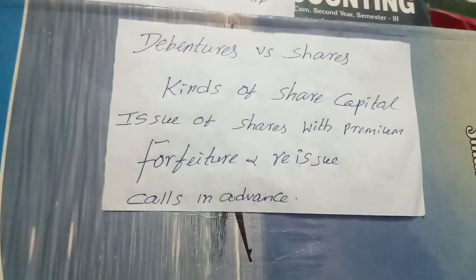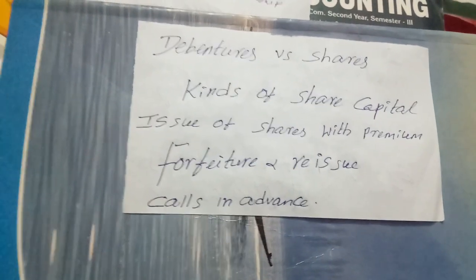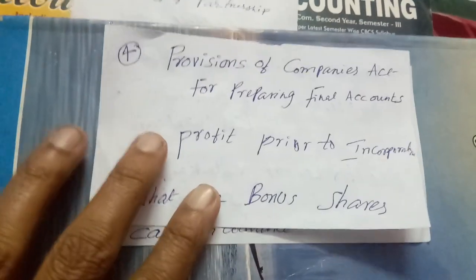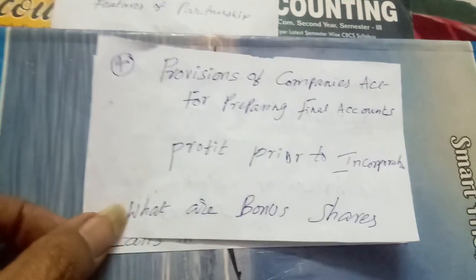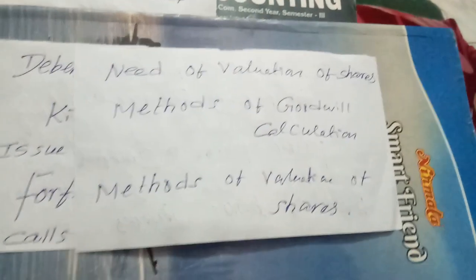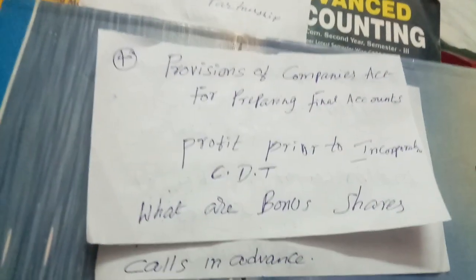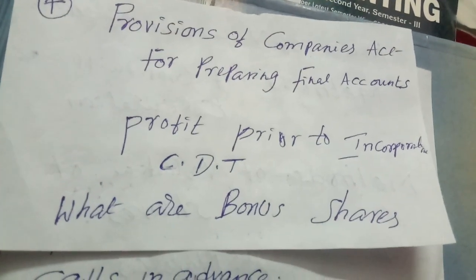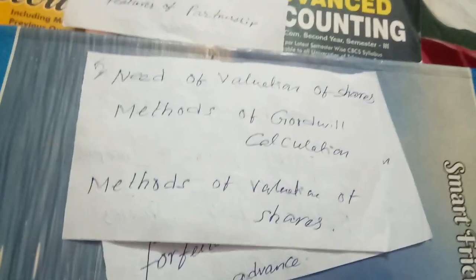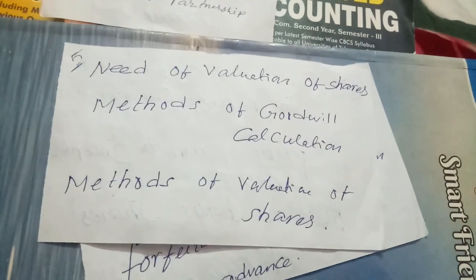Unit number four — corporate dividend tax is also important. Unit number five: prepare the theory questions. CDT means Corporate Dividend Tax, and profit prior to incorporation is also a definite question, either in short or in long form.